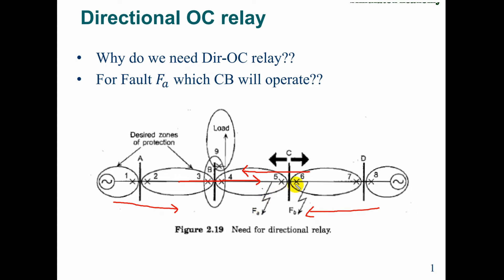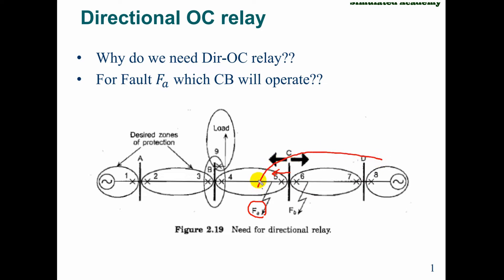If the fault current is away from the bus, we need to operate. For fault FA, relay RA — the fault current goes from bus D to C, or C to ground. For relay number 6 or circuit breaker 6, the current direction is towards the bus, and for relay number 5 or circuit breaker 5, it is away from the bus. The one with current away from the bus will operate and open the circuit breaker to isolate the fault.